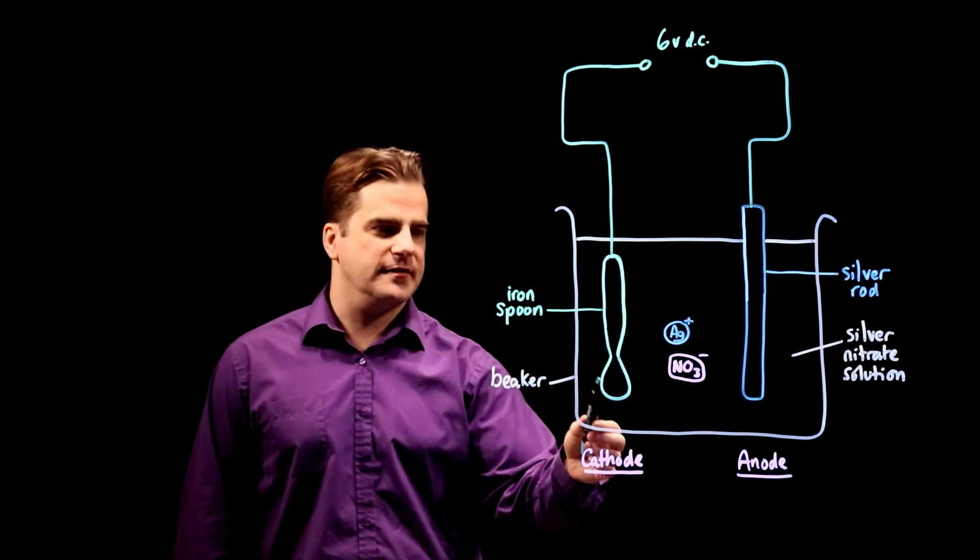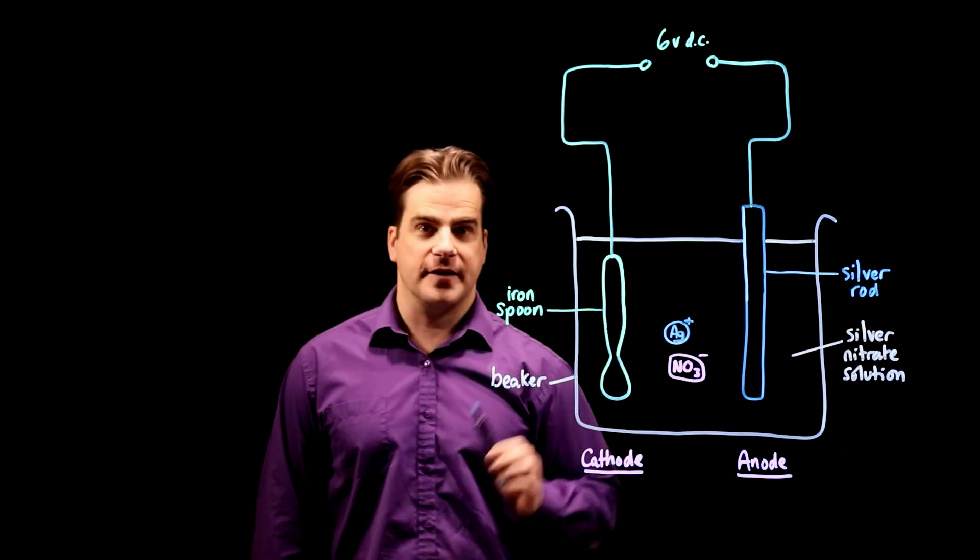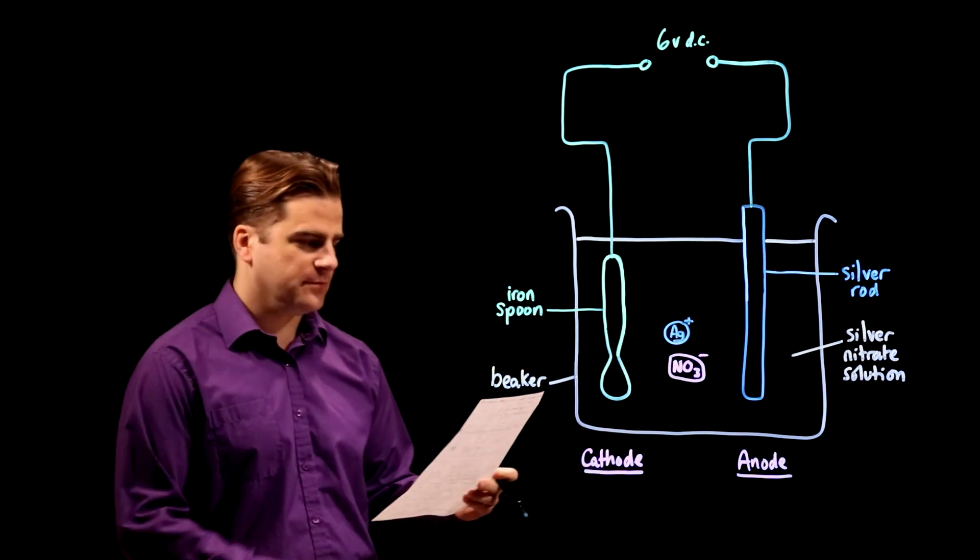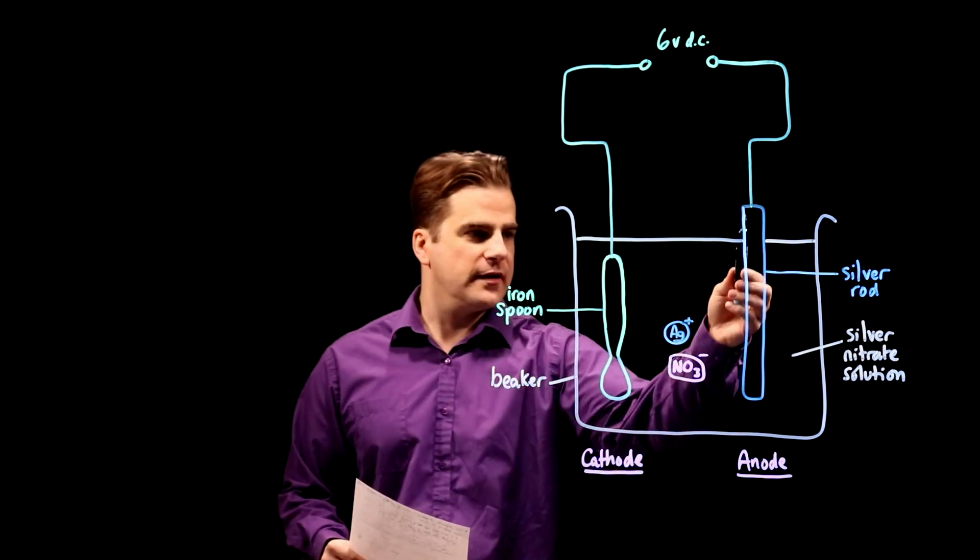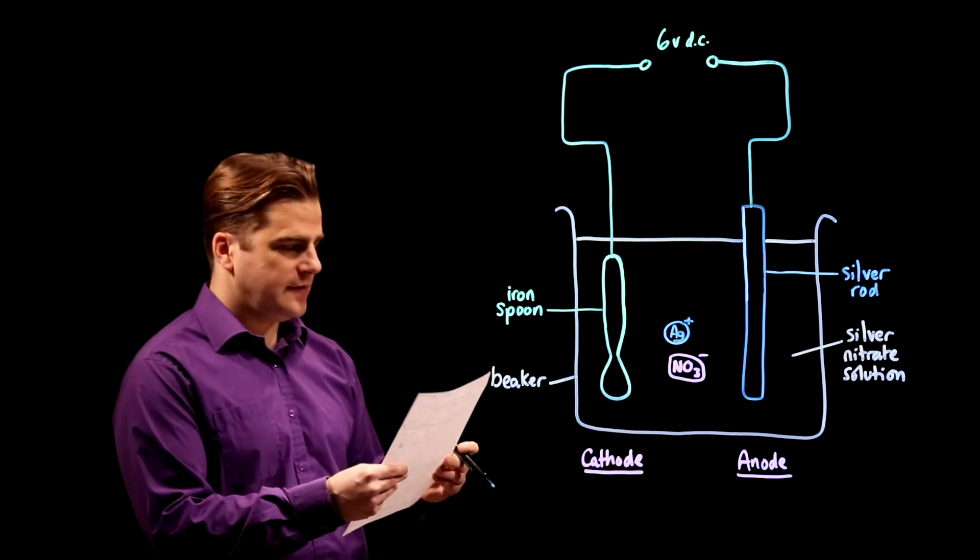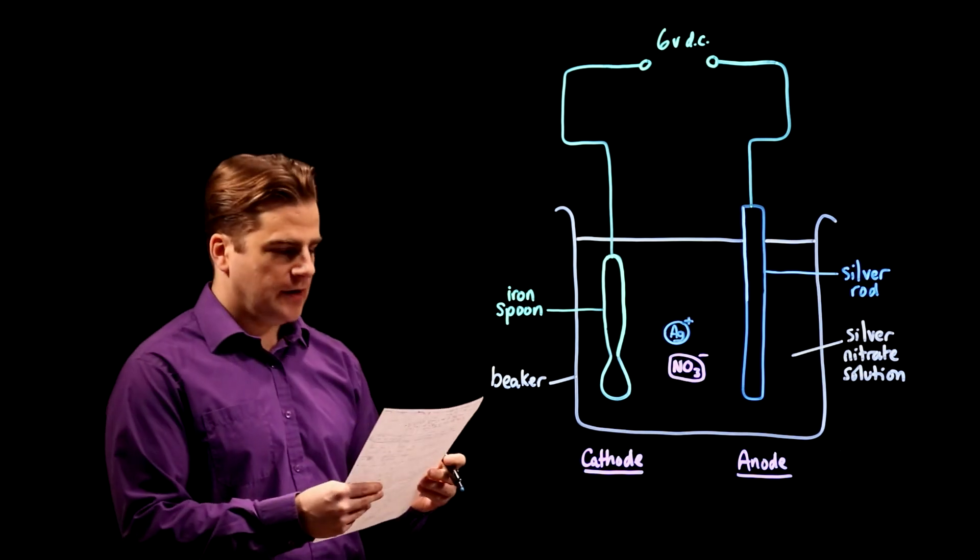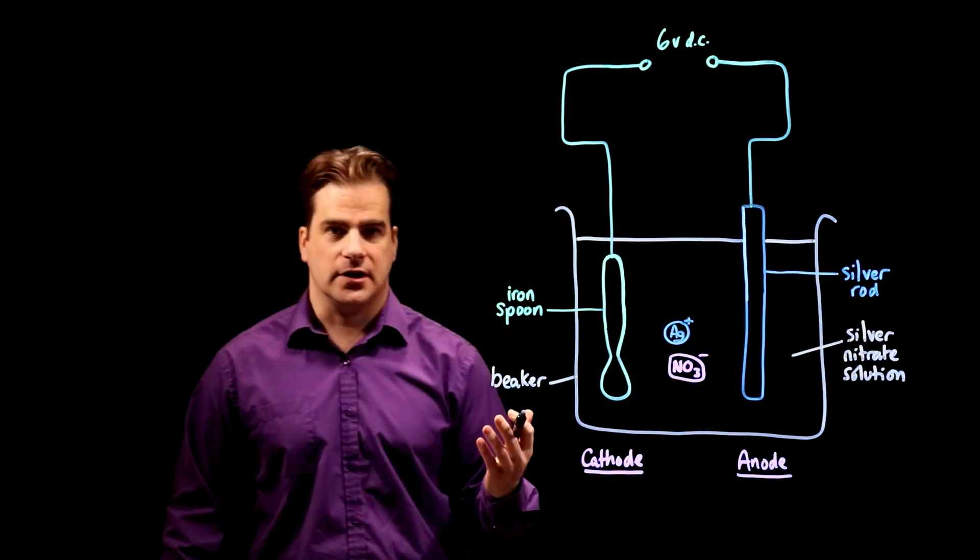We're going to electroplate an iron spoon with some silver. So, the first question is, at the silver rod electrode, that's here, is it oxidation or reduction and does it have a positive or negative charge?